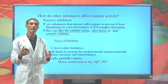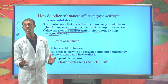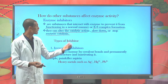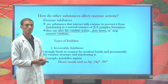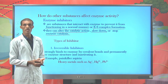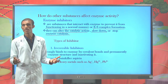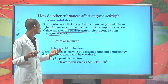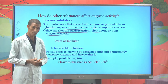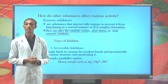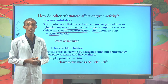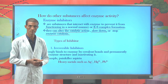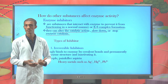The rate of enzyme activity can be inhibited by different factors, including inhibitors. Inhibitors can be classified into two main types: reversible inhibitors and irreversible inhibitors.